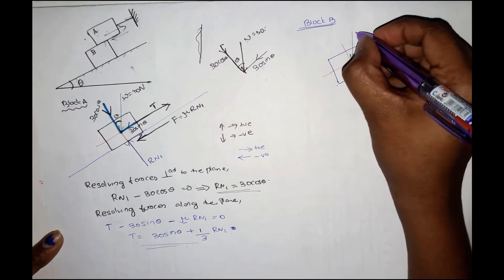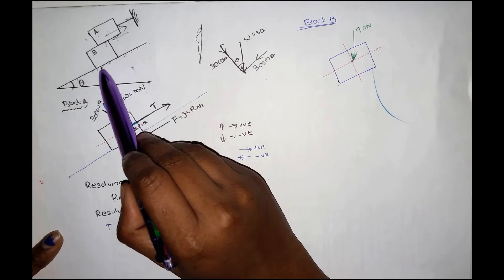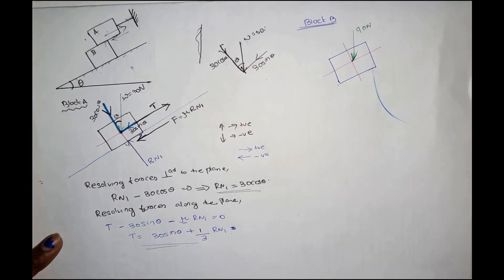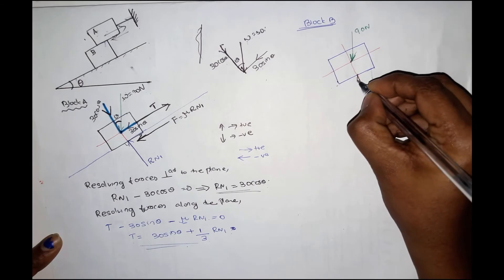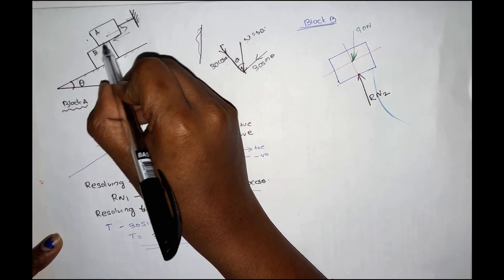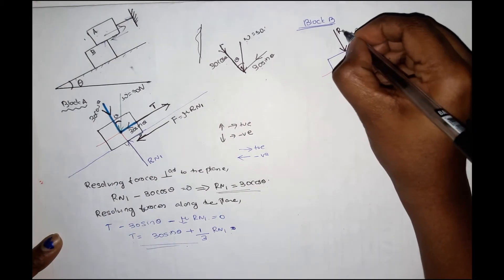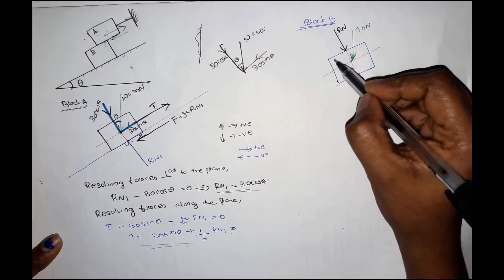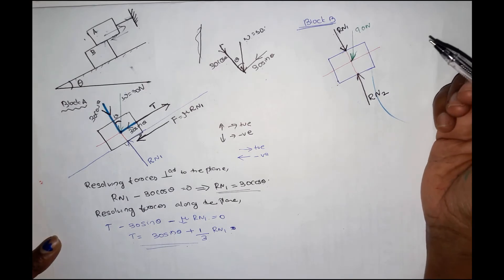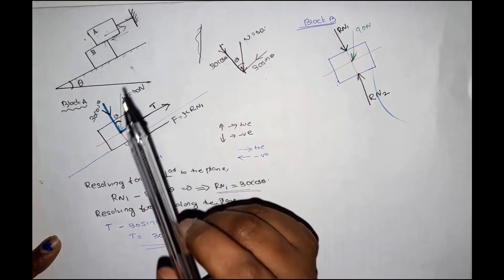Now for block B, which weighs 90 N and is vertical. It has contact surfaces, so there are two normal reactions: Rn2 perpendicular to the inclined surface, and Rn1 from contact with block A. There is no additional external force on block B. The friction forces act on the two contact surfaces.